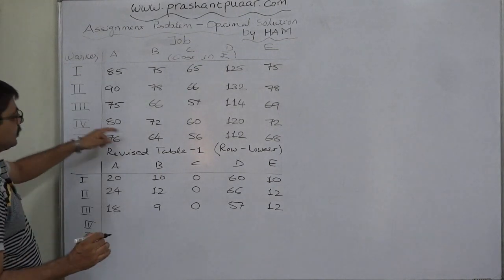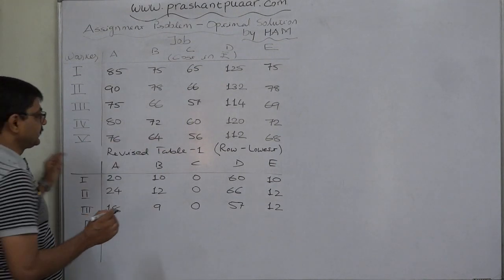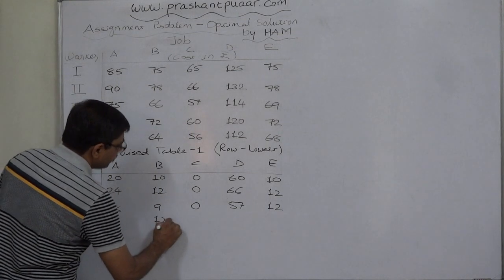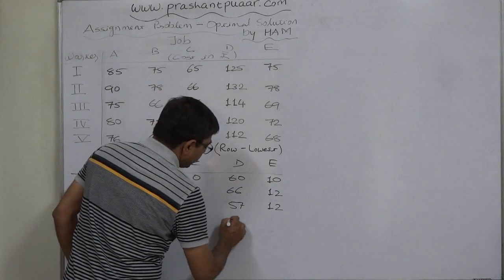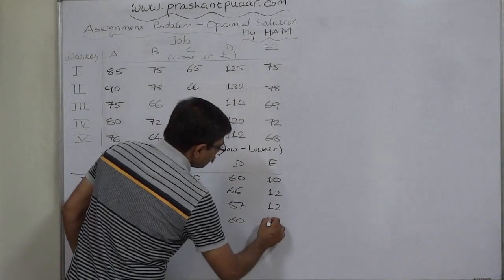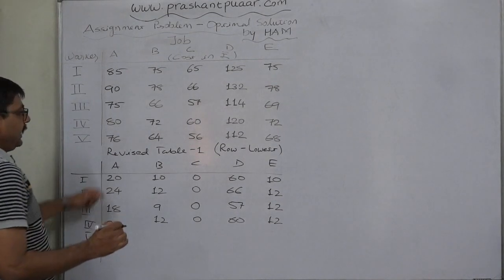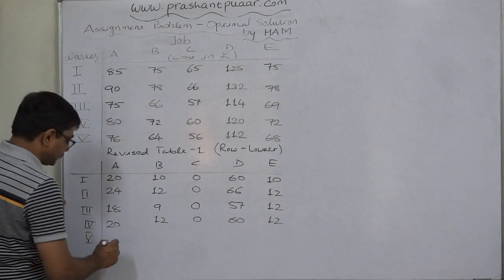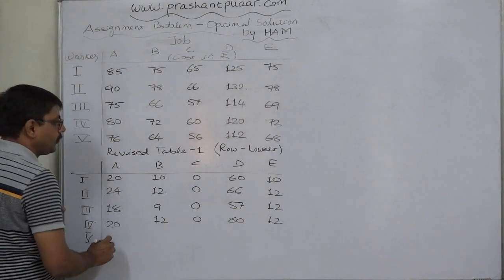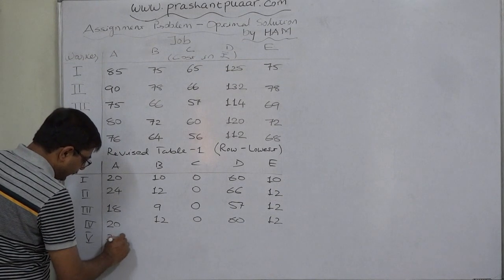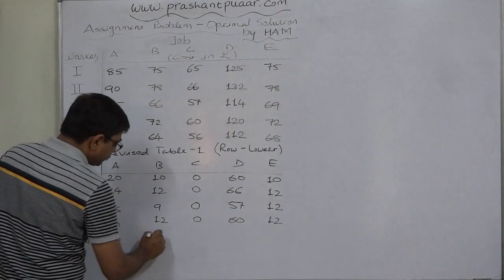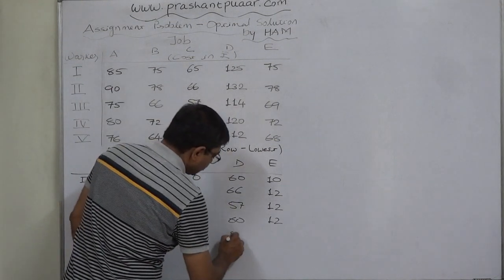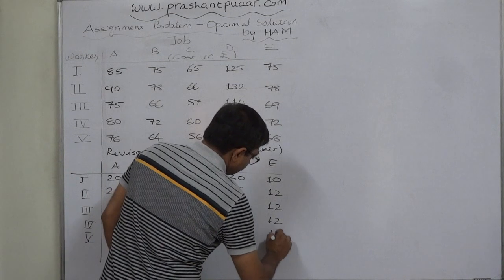In the fourth row, the lowest value is 60. Subtracting: 80 minus 60 is 20, 72 minus 60 is 12, and 60 minus 60 is 0. In the fifth row, the lowest value is 56. Subtracting: 76 minus 56 is 20, 64 minus 56 is 8, 56 minus 56 is 0, 112 minus 56 is 56, and 68 minus 56 is 12.